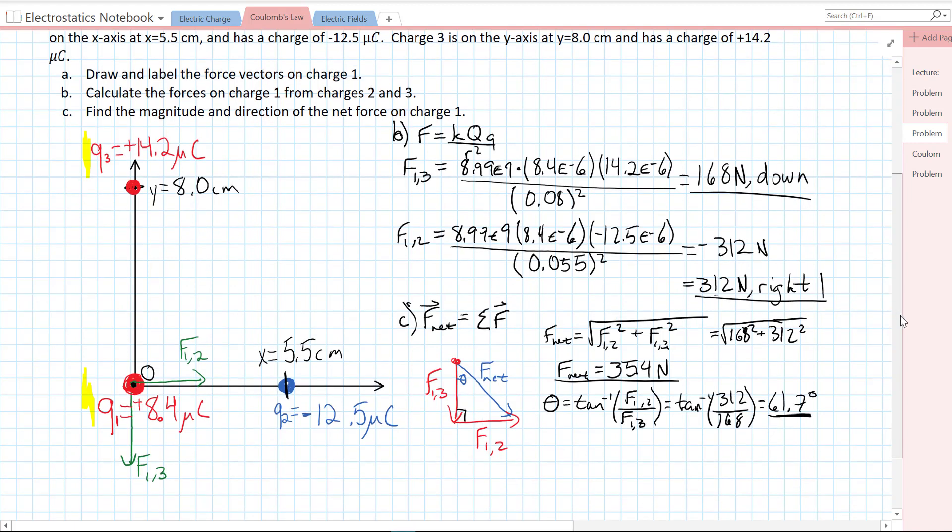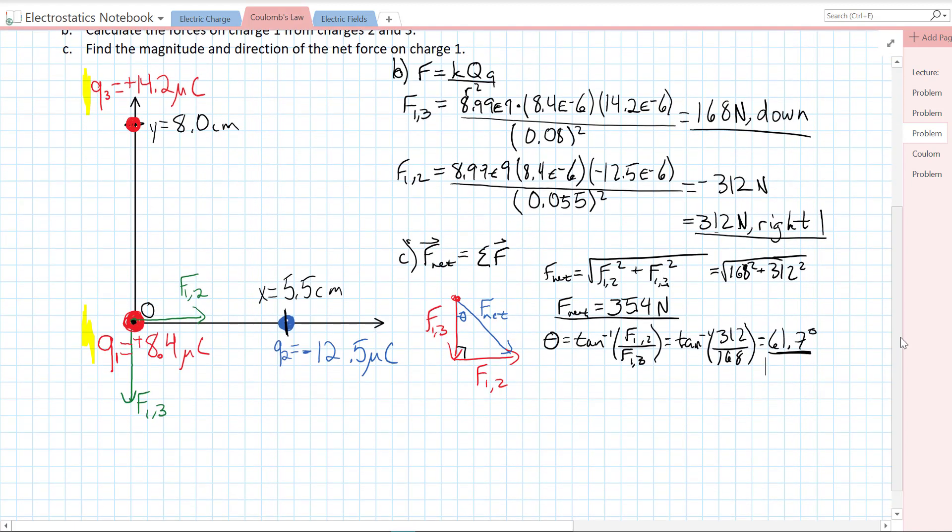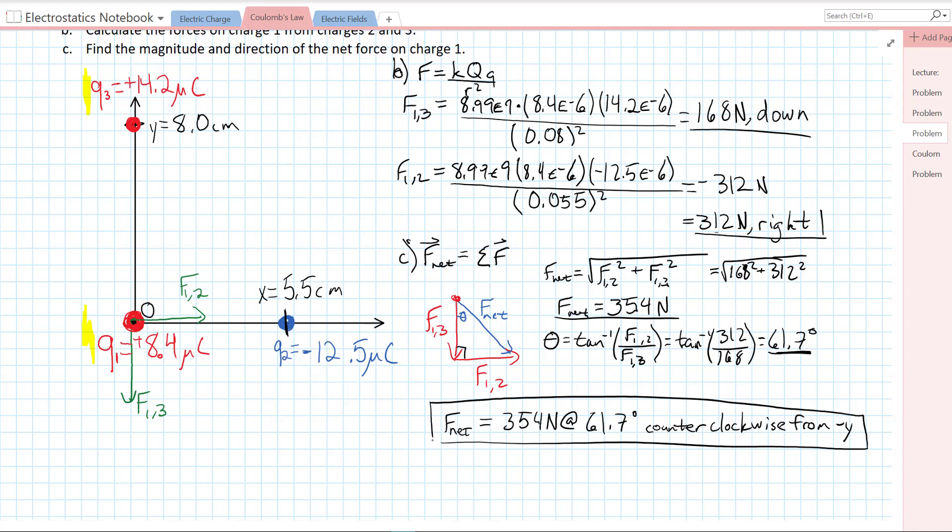To sum it all up, the net force on 1 is equal to 354 newtons at an angle of 61.7 degrees. We started from negative y and rotated counterclockwise from negative y. We could also write it as something like 29 degrees below the positive x axis. There's our answer.